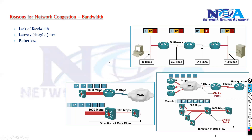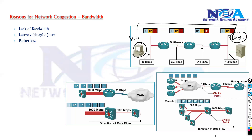Latency is the time taken by a packet to reach from source to destination across the network. We generally call this end-to-end delay or end-to-end latency, or network delay. In terms of rough calculations, the recommended threshold is that latency should not exceed 400 milliseconds for normal applications. For real-time traffic like VoIP, it should be somewhere around 150 to 200 milliseconds.